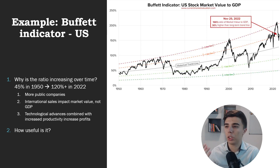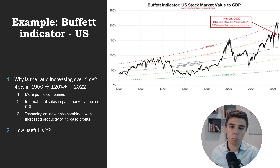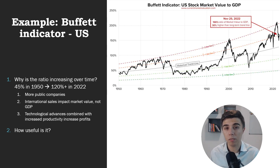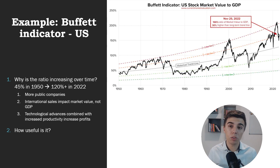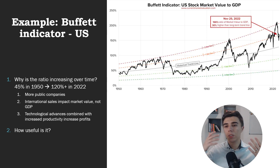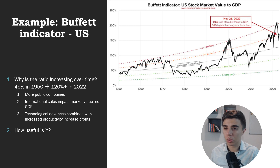Why is this ratio increasing over time? There are three arguments. The first is that there are more public companies, so market cap naturally grows faster than GDP — though this is not the strongest argument. The second, and a very strong one, is that international sales impact market value but not GDP. For example, Amazon's revenue earned outside the US is not part of US GDP, but it is part of Amazon's market cap. So there's a discrepancy between where value is captured in market cap versus where goods and services are produced.